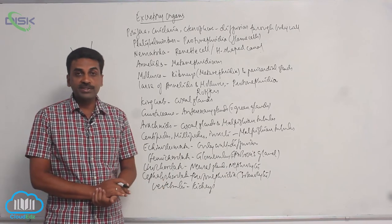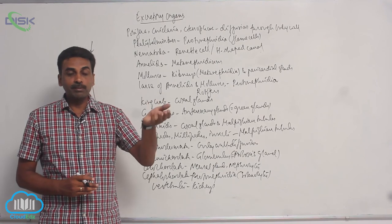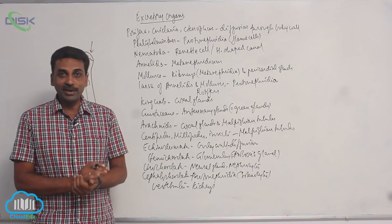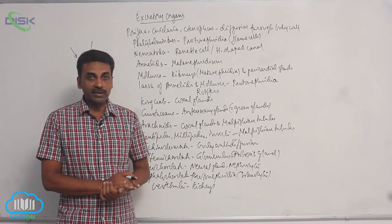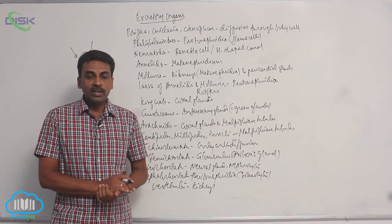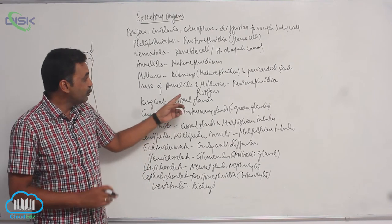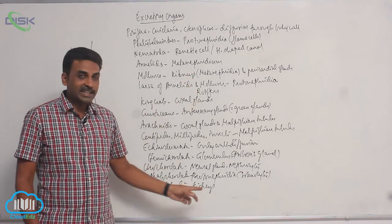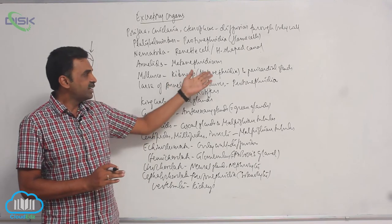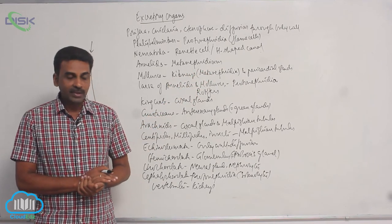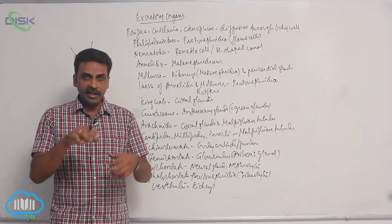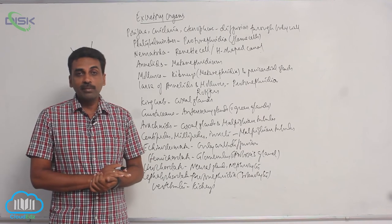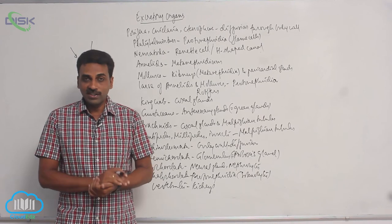Vertebrates — from cyclostomata, fishes, amphibians, reptiles, birds, and mammals — have kidneys as excretory organs. The kidneys of molluscs are actually metanephridia, structurally different from vertebrate kidneys. Vertebrate kidneys contain nephrons inside and are much more advanced. There are three types of kidneys: pronephros, mesonephros, and metanephros. Pronephros is generally not seen in adults, and even if present, it is not excretory — it is a lymphoid tissue.